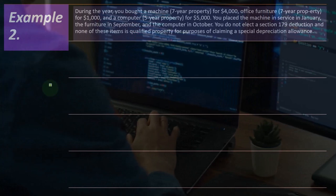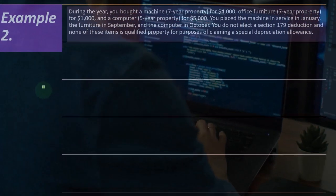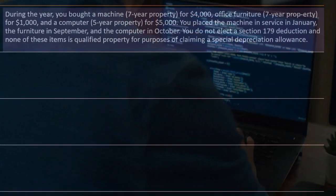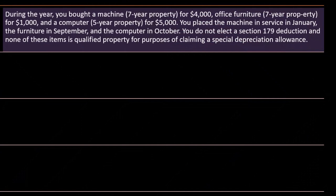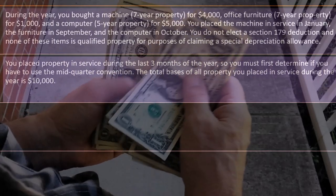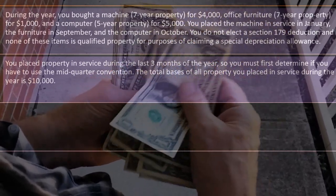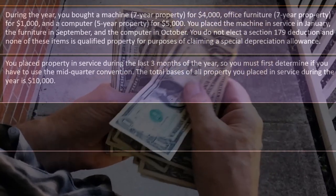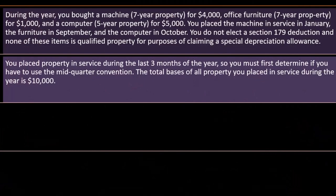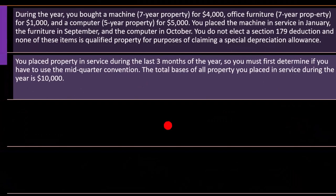Example two: During the year you bought a machine — seven-year property — for $4,000, office furniture — seven-year property — for $1,000, and a computer — five-year property — for $5,000. You placed the machine in service in January, the furniture in September, and the computer in October. You do not elect the Section 179 deduction, and none of the items is qualified property for the special depreciation allowance, so we're just looking at MACRS. These property types usually use a half-year convention, meaning we assume they were all bought in the middle of the year.